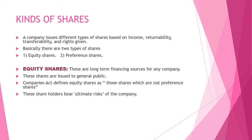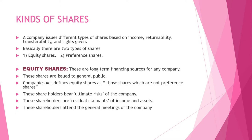These shareholders bear the ultimate risk of the company. That is the reason these shareholders are called the shock absorbers of the company. These shareholders are residual claimants of income and assets — meaning the income that is left after paying off all the direct and indirect expenses. Only equity shareholders are allowed to attend the general meetings of the company.